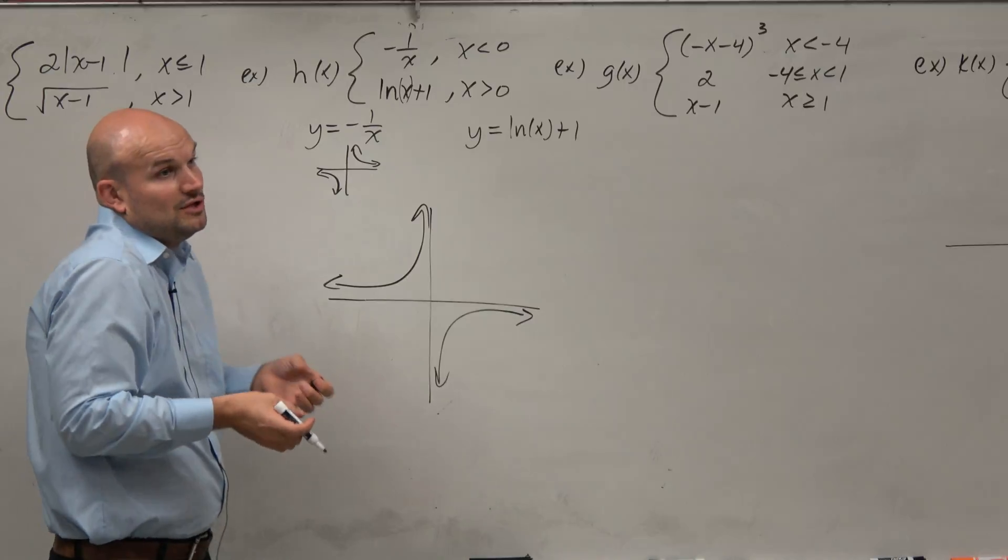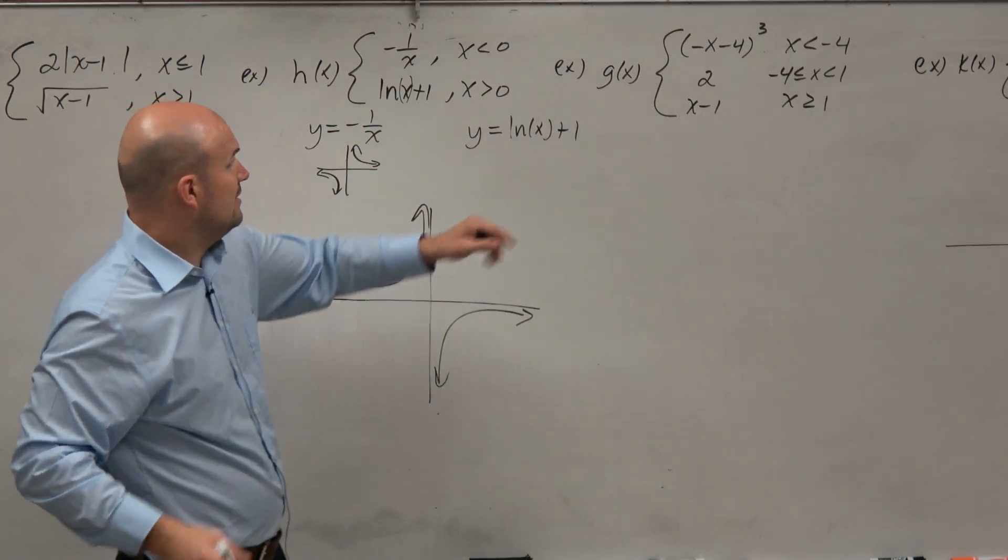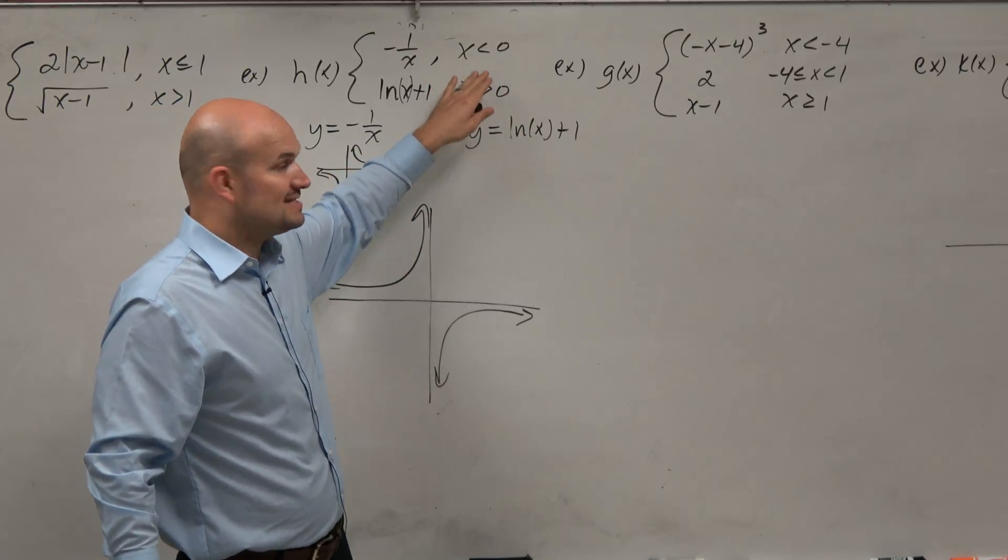But then, now we look at the domain restrictions. We've got to restrict the graph based on its domain. This says only graph this for when x is less than 0,